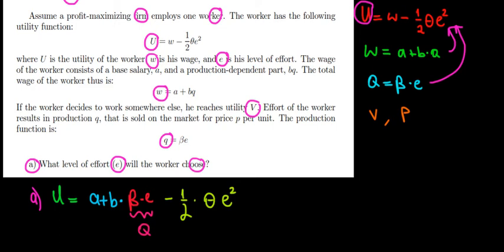We can see the relationship between the utility and the effort level. The effort is a quadratic term with a negative coefficient, meaning we have to differentiate the utility function with respect to it and make that equal to zero to find the maximizing level of effort.